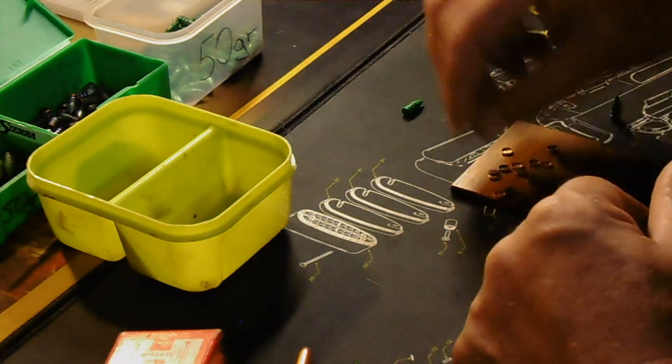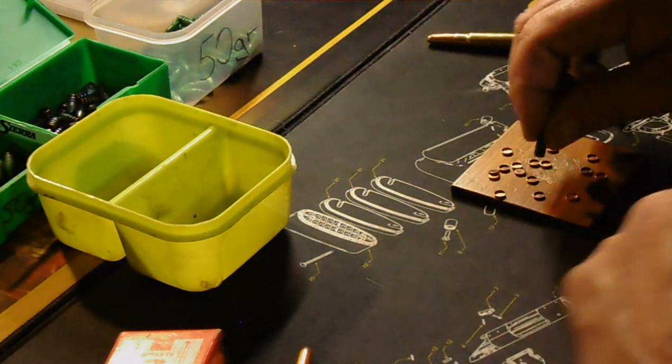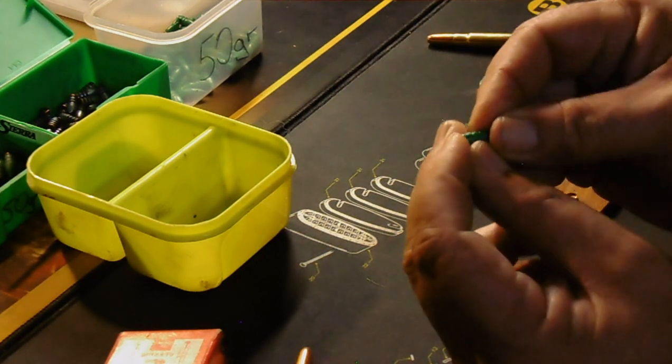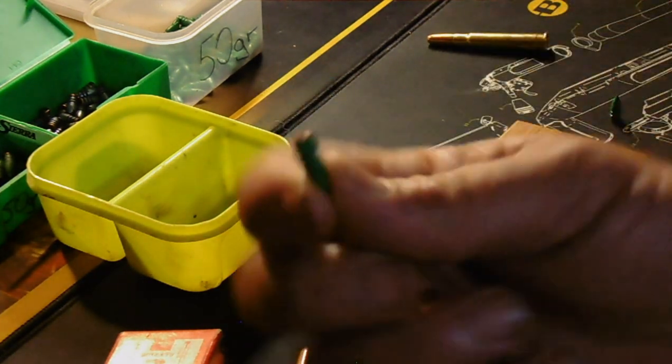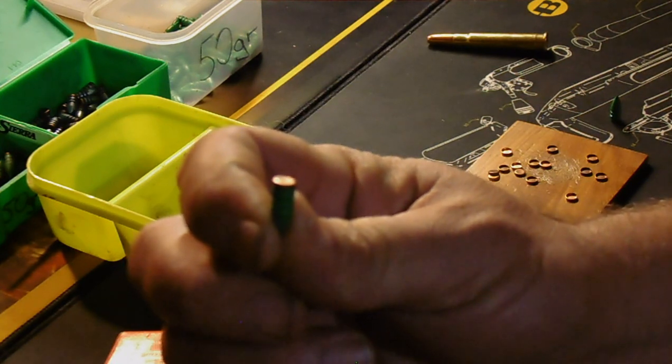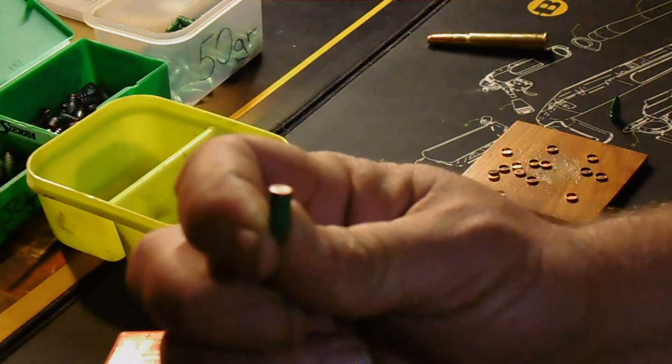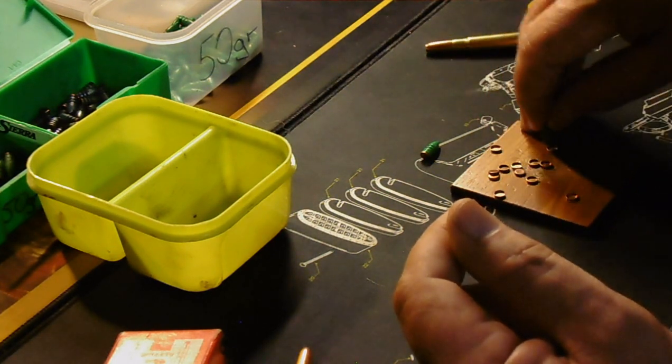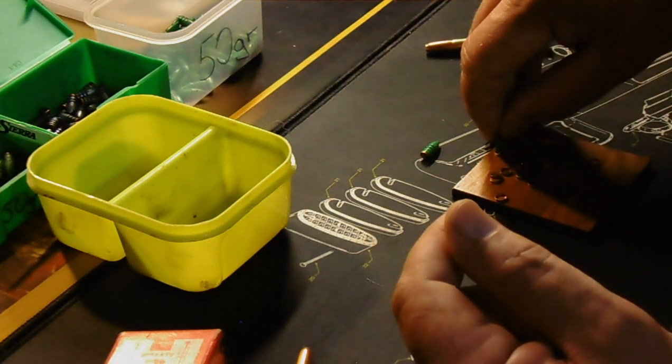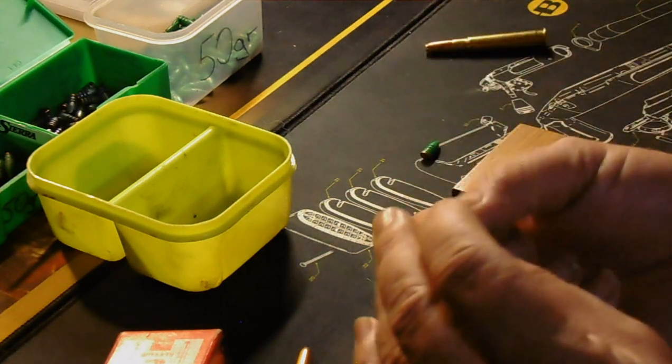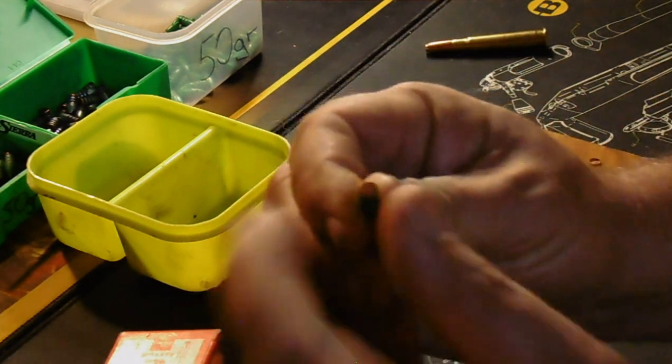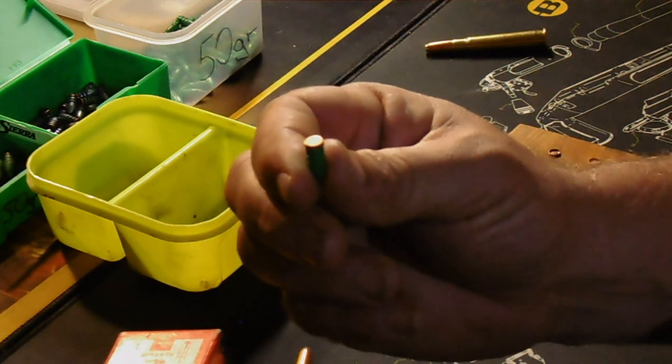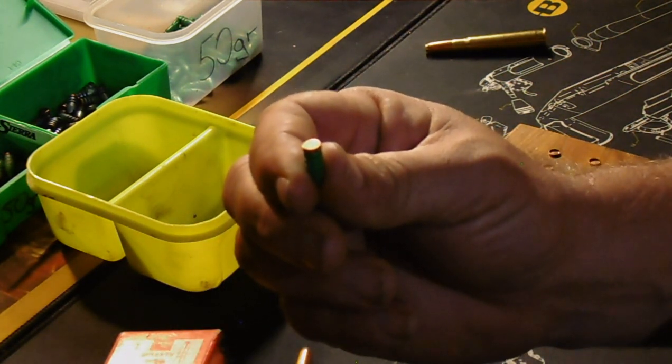So before expansion, the gas check didn't fit. It sits at an awkward angle at the base of the bullet. After expansion, it fits the base of the bullet, this one very loosely. So you just put it through your expander die, load and shoot.